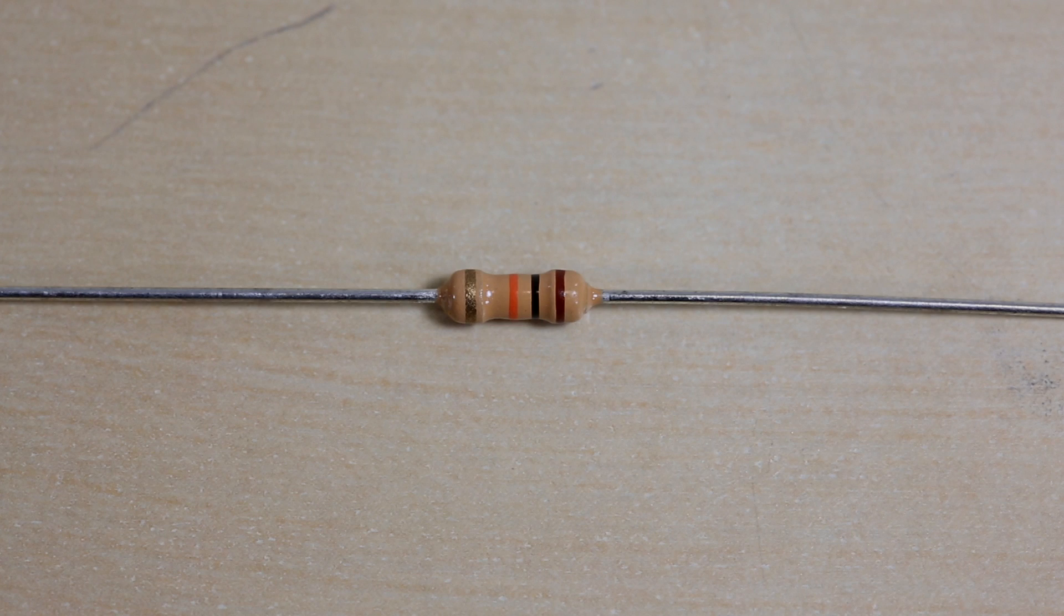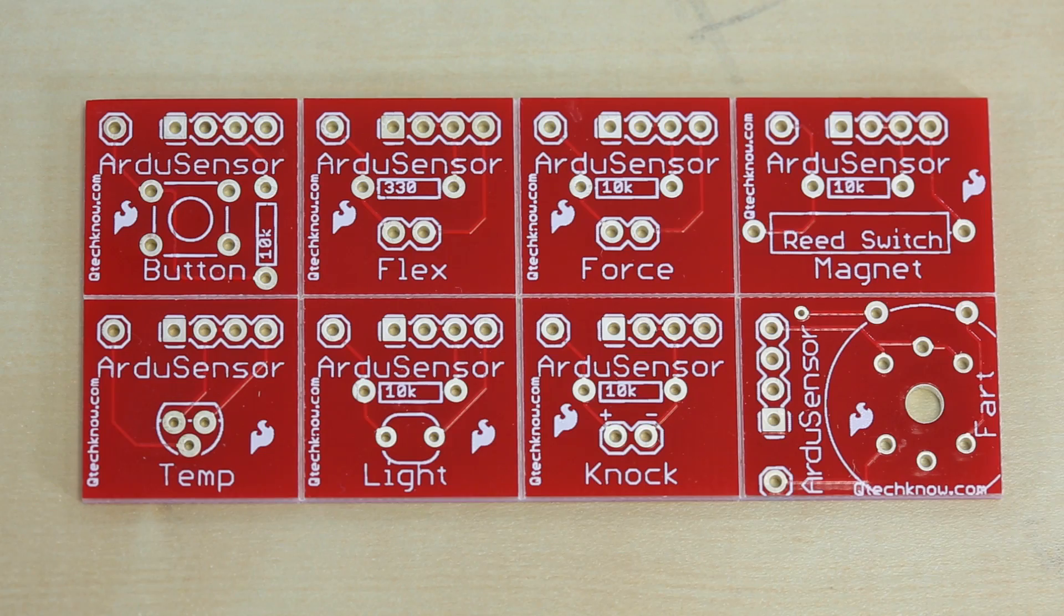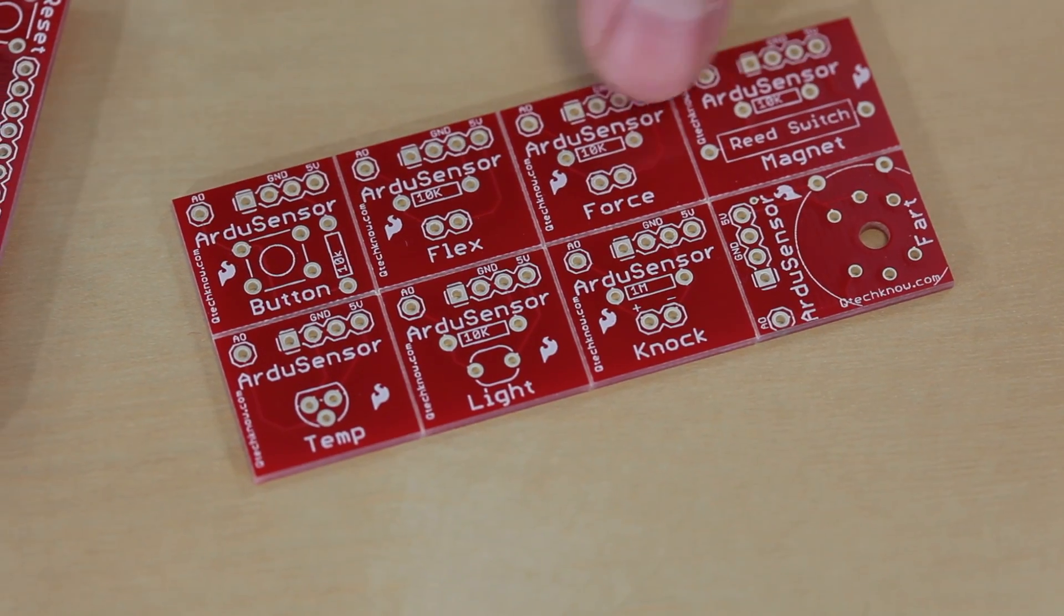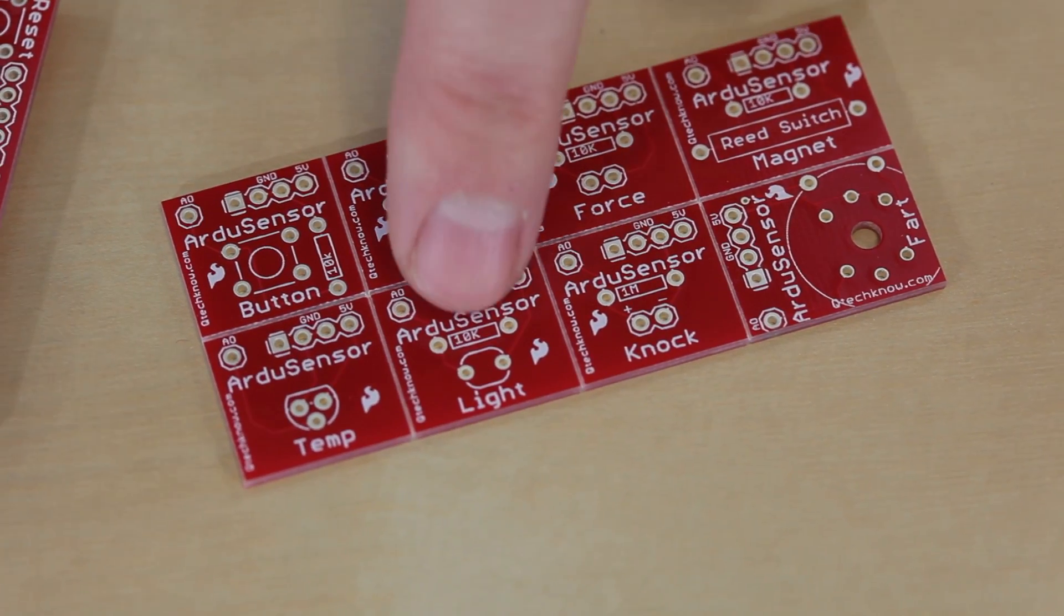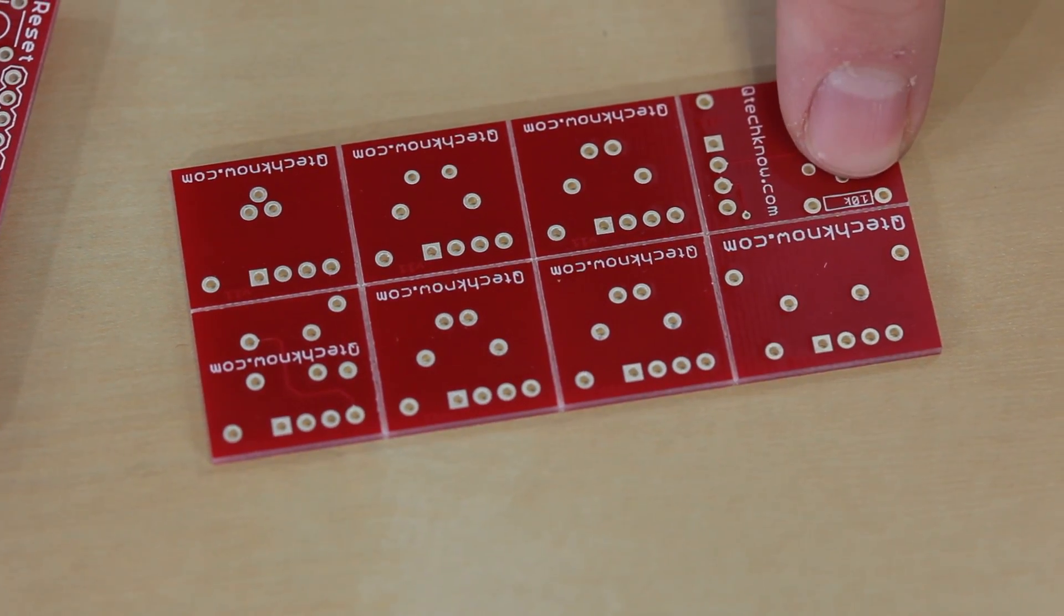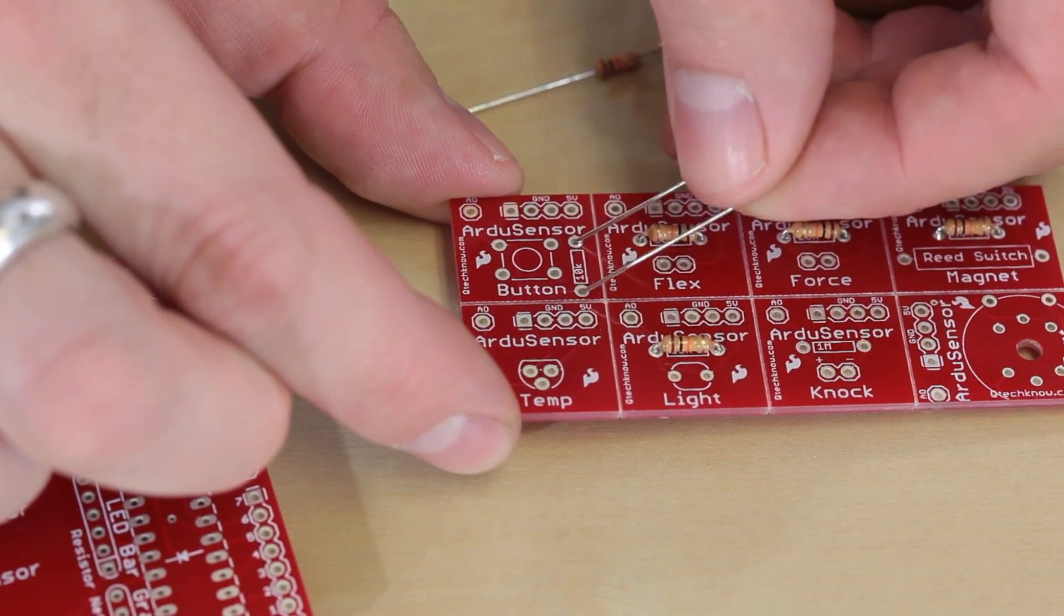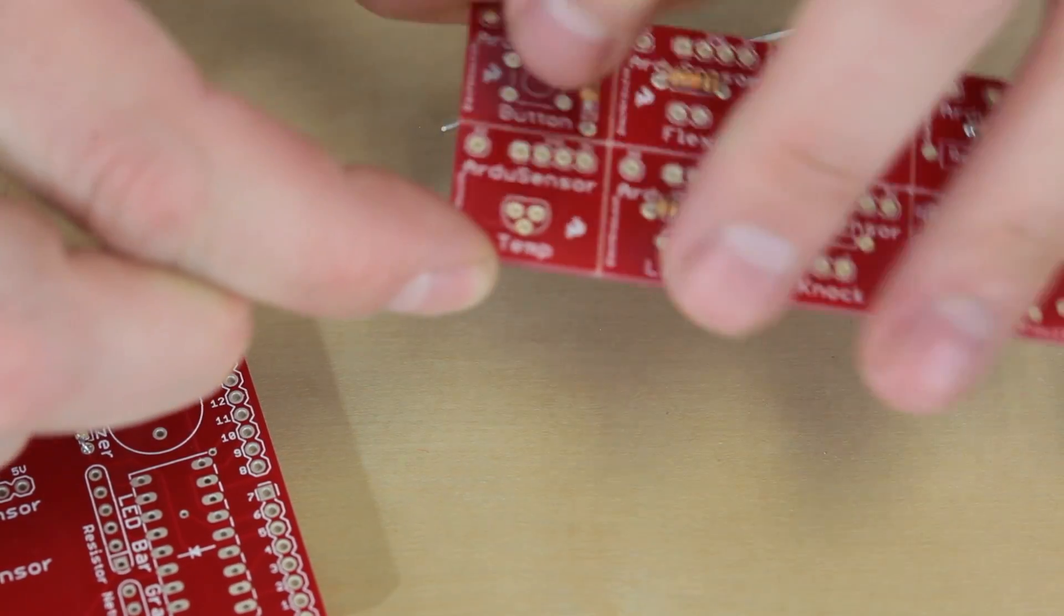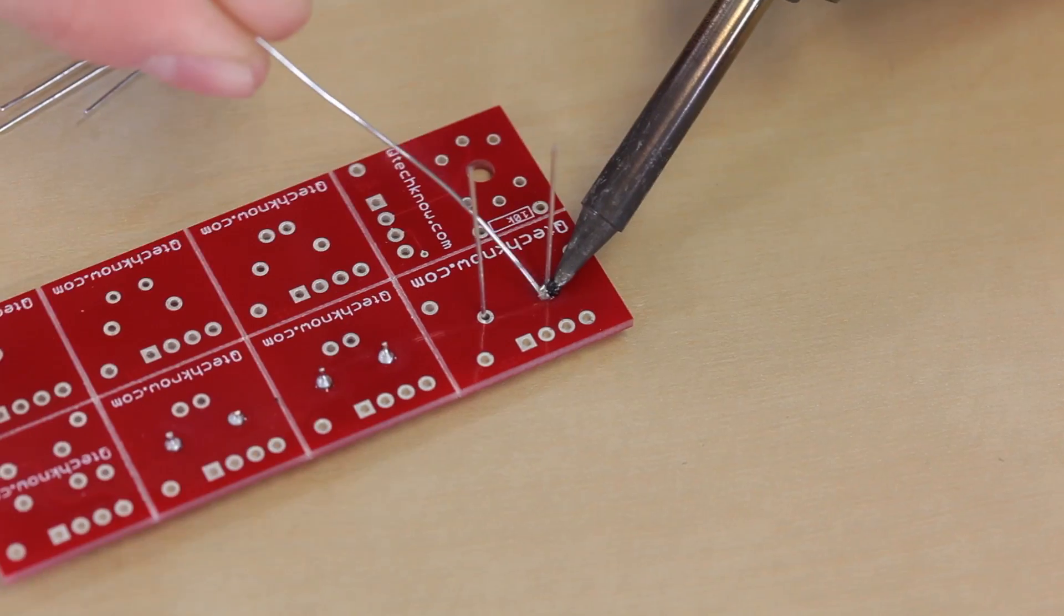Next, we need to take the 10K resistors and solder them onto this board. There's a 10K, 10K, 10K, 10K, and if we flip it over, there's also a 10K down here. We're going to bend the leads and insert them into the holes, flip the board over, and solder the leads.